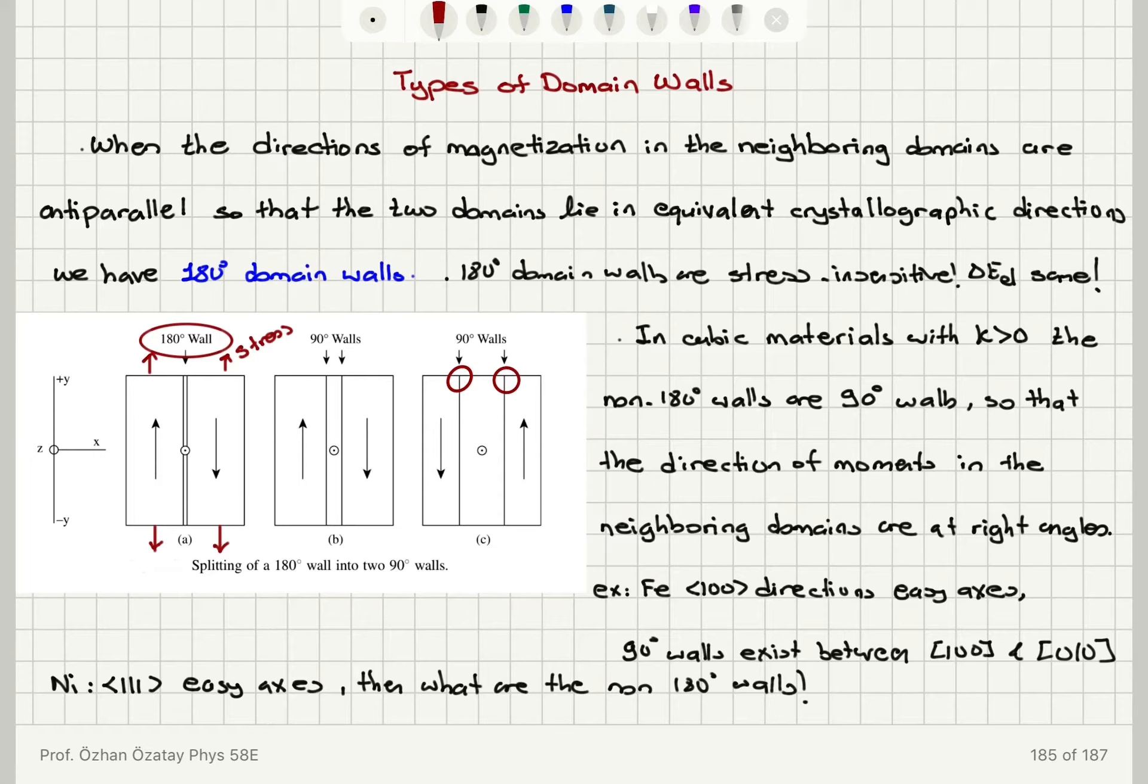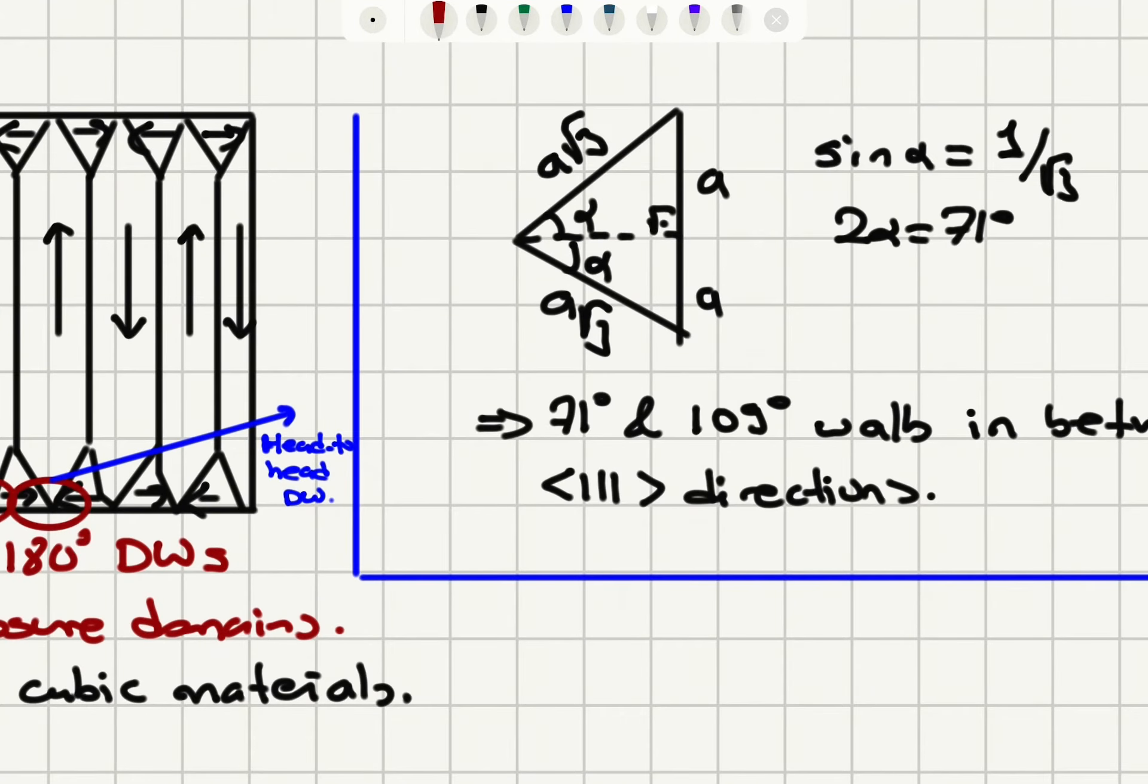In nickel with 111 easy axis, what are the non 180 degree domain walls? Well, if you look at the body diagonal, which is square root 3 times a where a is the lattice constant, you find that the angle